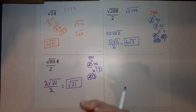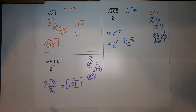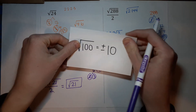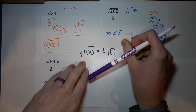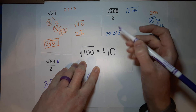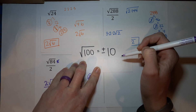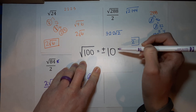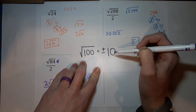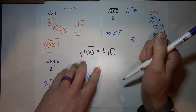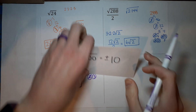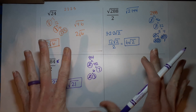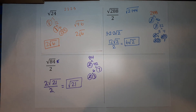Quick side note: just a heads up — soon, if you haven't already, you'll learn that the answers to square roots technically have a plus or minus. The reason for that is because 10 times 10 gives me 100, and also negative 10 times negative 10 gives me 100. For our purposes today we didn't really need to talk about that, but just so you know, that's probably in your future.